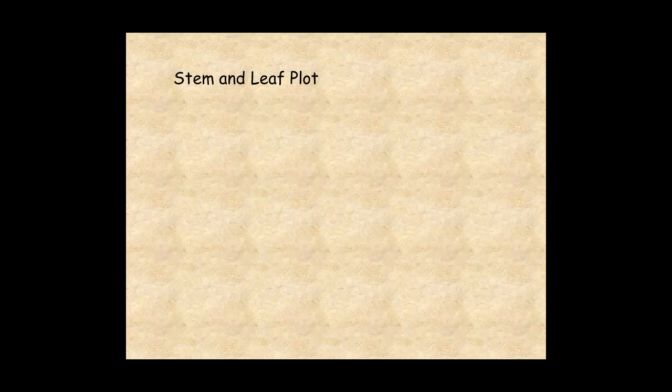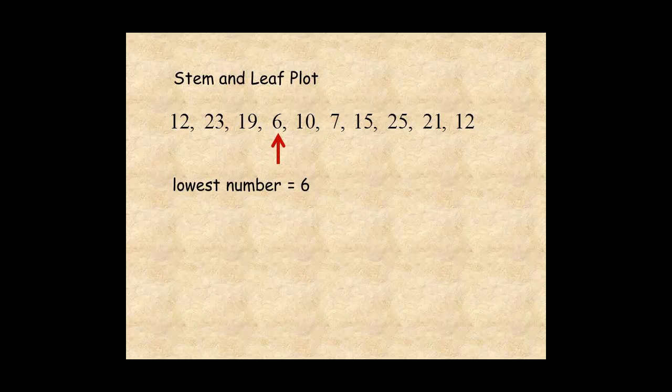Here's how to draw a stem and leaf plot step by step. A teacher asks her students how many books they have read in the past 12 months. Here are the answers. The first step is to identify the lowest number, 6, and the highest number, 25.